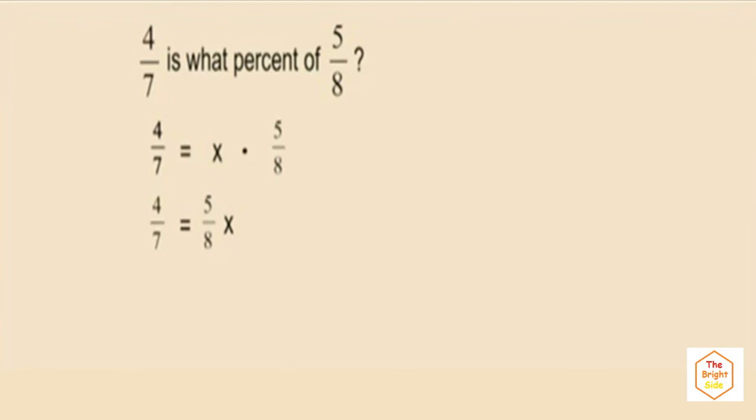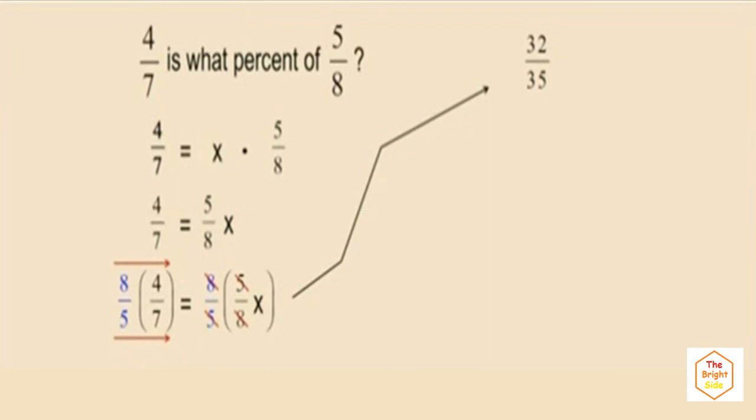And to solve this for x, we are going to use our reciprocal method. Meaning, notice how we have 5 eighths x. Well, we can divide both sides by 5 eighths, but dividing by 5 eighths means you're multiplying by 8 fifths, the reciprocal. So we're going to go ahead and do that. We're going to multiply both sides by 8 fifths, the reciprocal of 5 eighths. And on the left-hand side, we get 32 over 35 up there. Now, notice on the right-hand side, the eighths cancel out, so do the fives, and we end up with 1x for our answer.